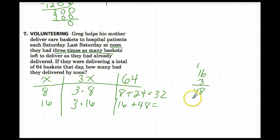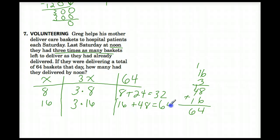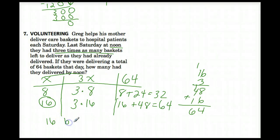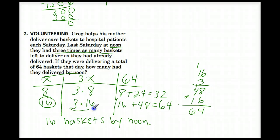Does 16 plus 48 equal 64? Let's work it out: 8 and 4 is 12, carry the one — that equals 64 baskets. So the answer works. How many had they delivered by noon? We know that the X column represents how many they delivered before noon, so they had delivered 16 baskets by noon. And they still had 48 left to deliver after noon.